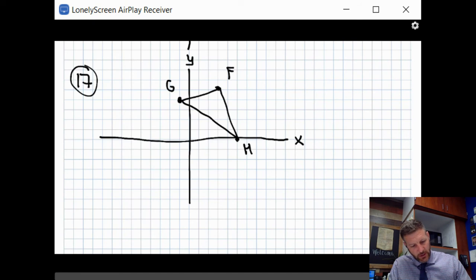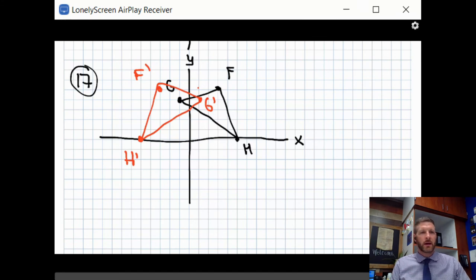In this case, everything has to go as if we spun it around this pole here. That means this G point, instead of being one to the left, is going to be right here, one to the right. And F, rather than being one, two, three to the right, it's going to be one, two, three to the left. So F prime is actually right here. And then H, instead of being one, two, three, four, five to the right, it's going to be one, two, three, four, five to the left. That's my H prime. If we connect those, we have our new triangle: F prime, G prime, H prime. We can see that it reflects directly across that Y axis.